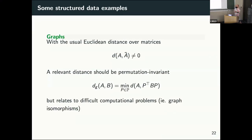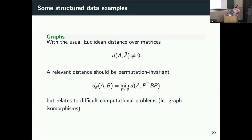Of course we can try to find a permutation-invariant distance — instead of taking the Euclidean distance between adjacency matrices directly, we could find the permutation that minimizes the Euclidean distance. But that means that for finding the distance between two points, we have to solve an optimization problem that is NP-hard — graph isomorphism. So we just put an extra hard problem on top, and we have to find another way.